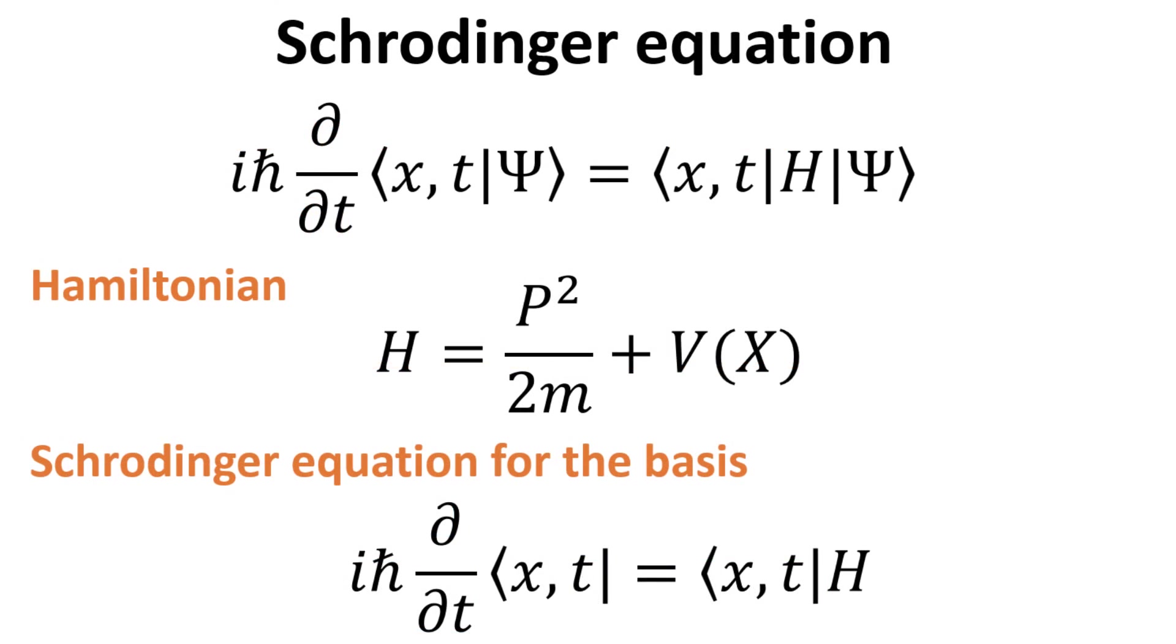First, we write down our Schrödinger equation explicitly, where the time dependence is made explicit in the x-bra. The Hamiltonian H is the energy observable, which consists of the kinetic and potential energy. We can factor out the psi kets and write down the Schrödinger equation for the x-bra, which allows us to describe its time evolution.